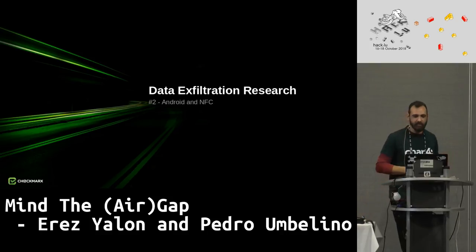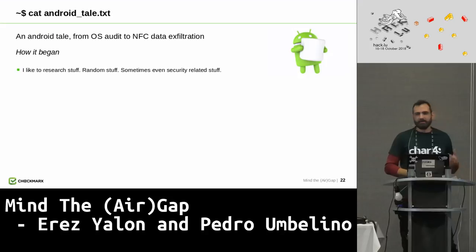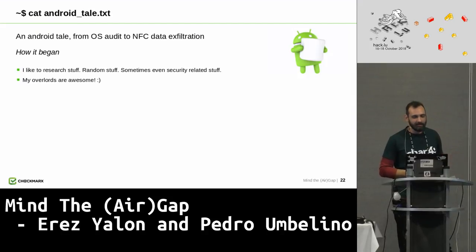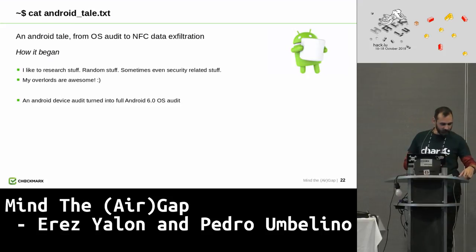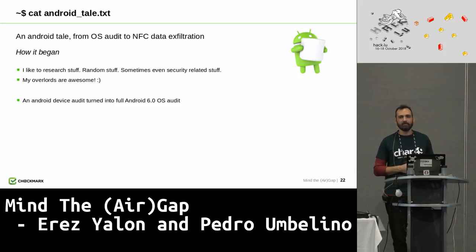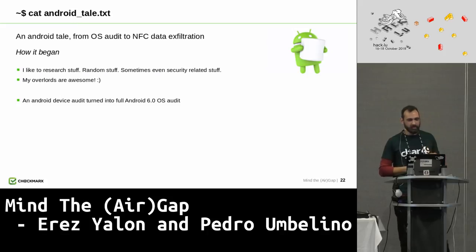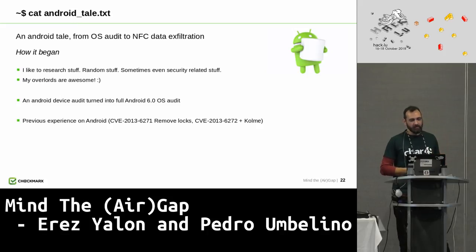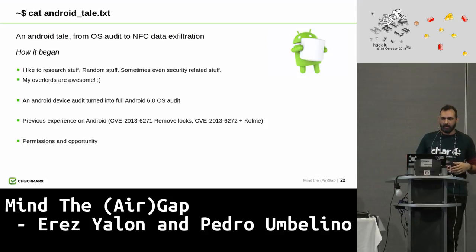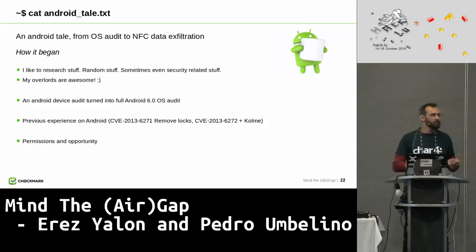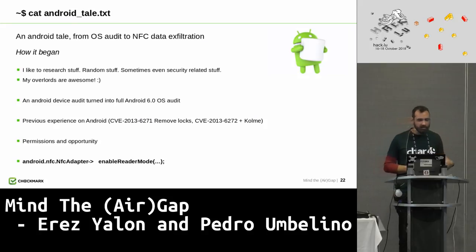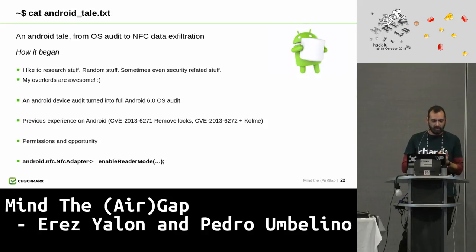I'm going to tell you another tale about Android. I wanted to research a particular brand of Android devices. The audit turned out not very profitable in terms of bugs, so I moved on to a full Android OS audit — it was Android 6.0 at the time. I usually look for permission bypass mechanisms, logic errors, and opportunities to make the device behave in unexpected ways. During this audit I found a package called NFC adapters and a function called enable reader mode.